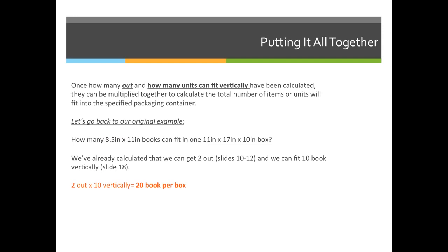Once we've completed both steps, we'll know how many out—which is how many fit across the bottom or one plane of the box—and how many tall, or how many vertical can be placed in the box. Once you have those values, multiply them together to get the total number of books that will fit in your box.